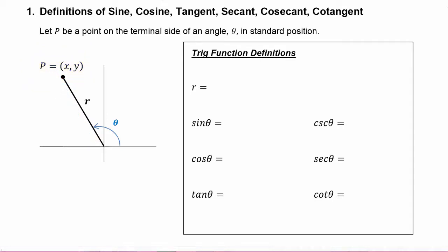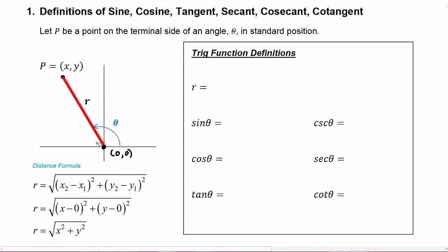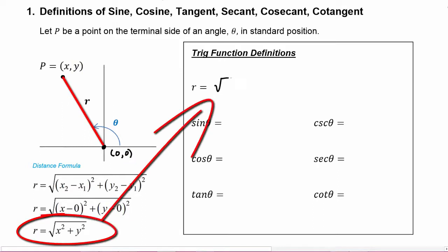We know of course that the origin is at the point (0, 0), so we would be able to find this distance r by using the distance formula, which you remember from your algebra class. We end up with the square root of the quantity (x minus 0) squared plus the quantity (y minus 0) squared, which simplifies to the square root of x squared plus y squared.